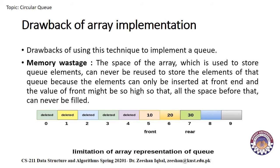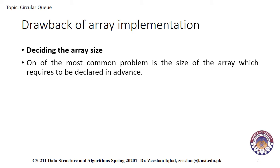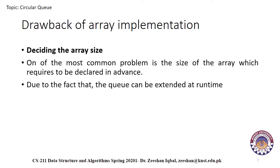The above figure shows how memory space is wasted in the array representation of a queue. In the figure, a queue of size 10 having 3 elements is shown. The value of the front variable is 5. Therefore we cannot reinsert values in the place of already deleted elements before the position of front. That space is wasted and can never be used in the future. Another drawback is deciding the array size, as the size requires to be declared in advance, and extending the array at runtime is time-consuming and almost impossible due to reallocation.